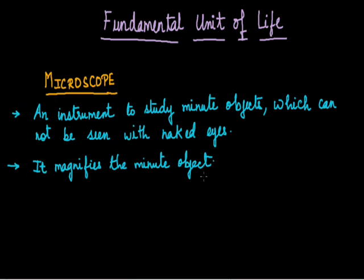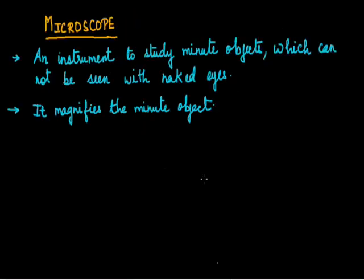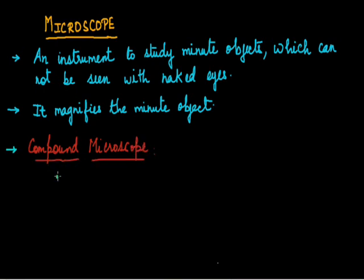Now there are various types of microscope, but the microscope we are going to study is the compound microscope. A compound microscope can be defined as a microscope which has more than one lens. There are also simple microscopes which usually have one lens. You can also say that a microscope is a system of lenses which magnifies the object to a level that can be easily observed with our eyes. The first compound microscope was built by F. Jensen and Z. Jensen in 1590.